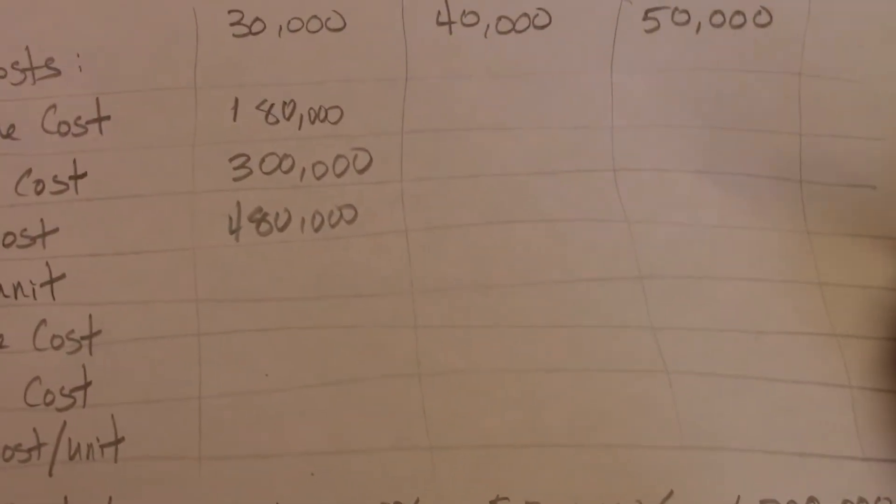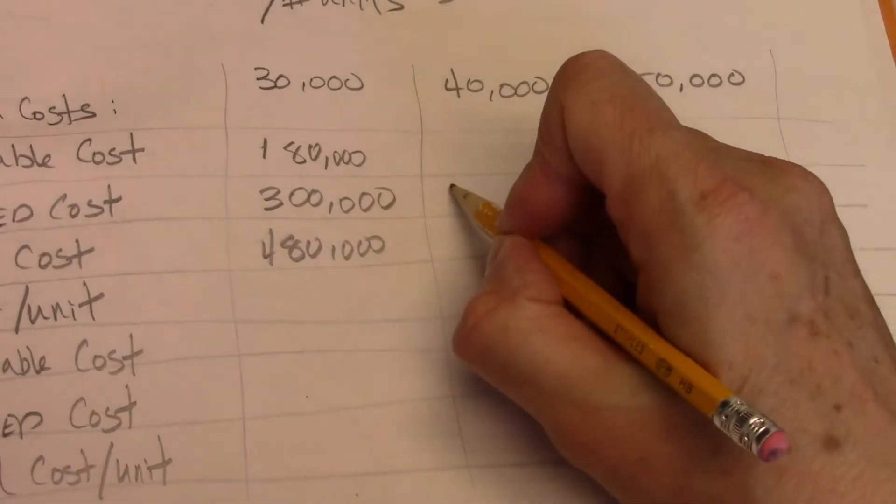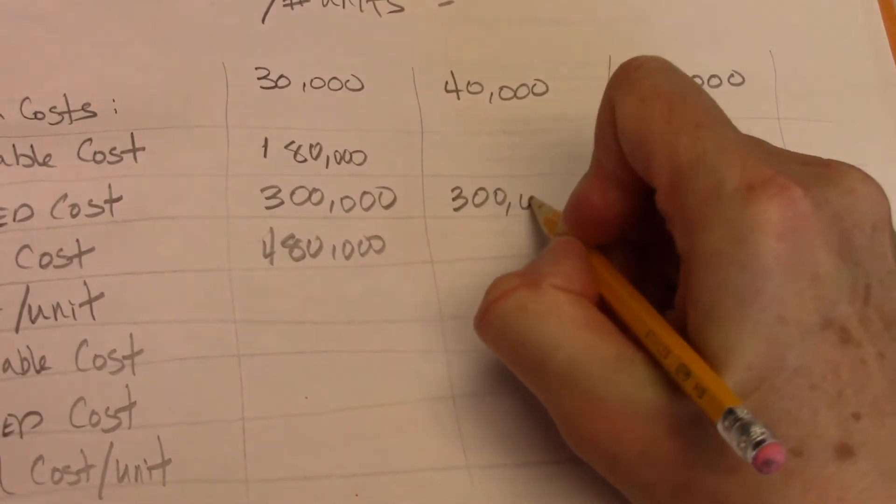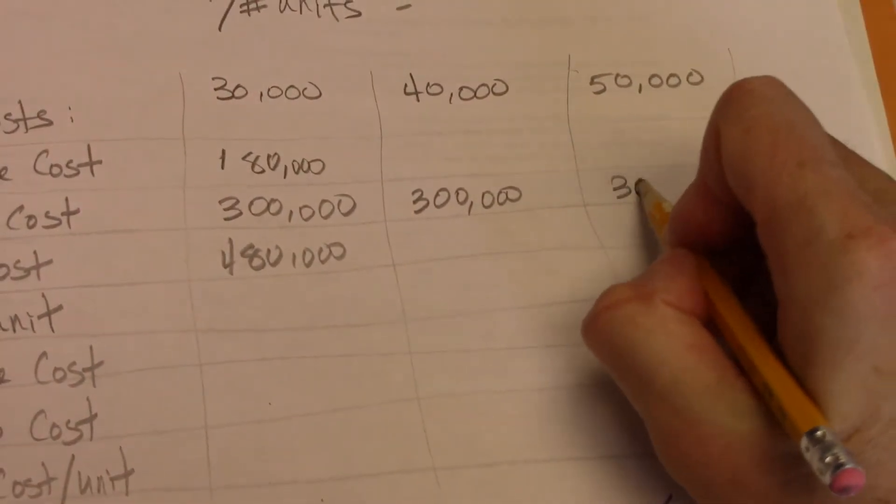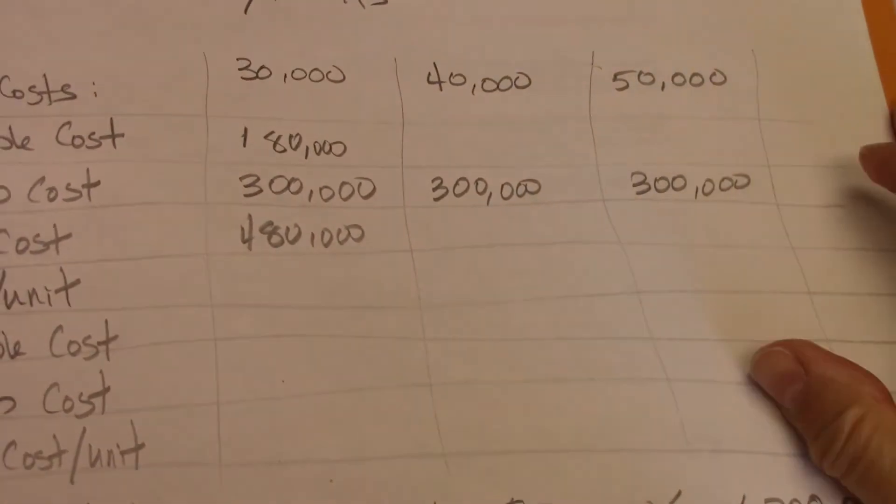Alright, so now I have to figure things out. Well, I know fixed costs are fixed costs, right? So $300,000 all the way across.